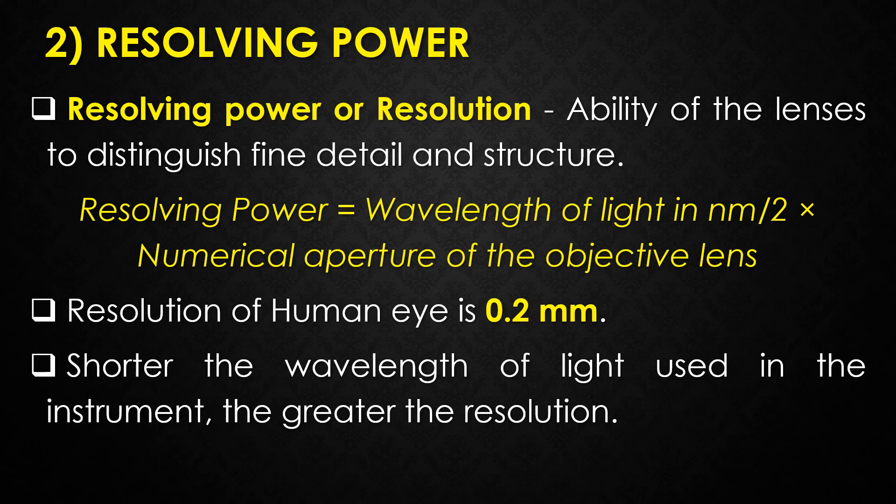Specifically, resolving power refers to the ability of the lenses to distinguish two points a specified distance apart. For example, if a microscope has a resolving power of 0.2 nanometers, it can distinguish two points if they are at least 0.4 nanometers apart. The resolution of the human eye is 0.2 millimeters. The general principle of microscopy is that the shorter the wavelength of light used in the instrument, the greater the resolution.